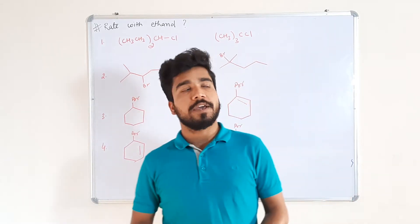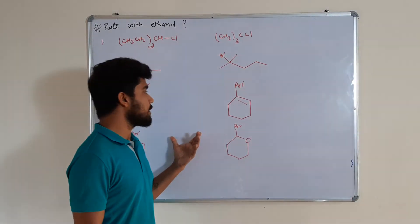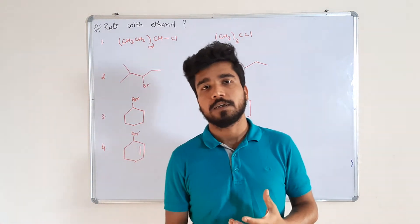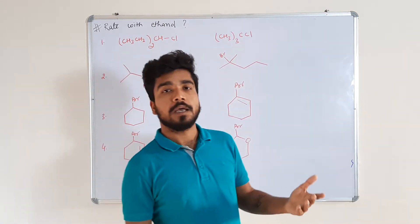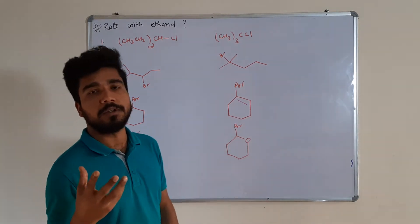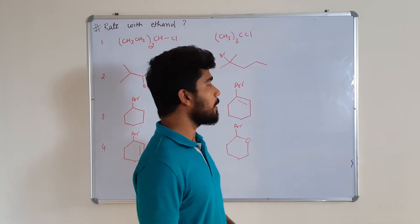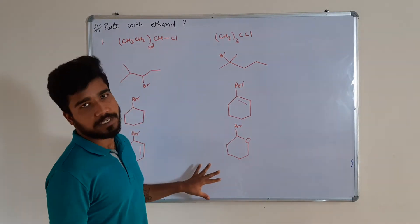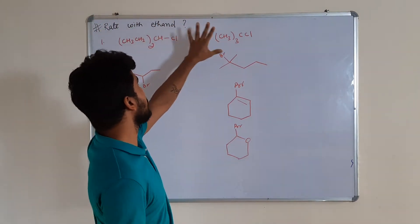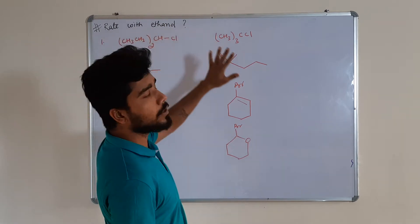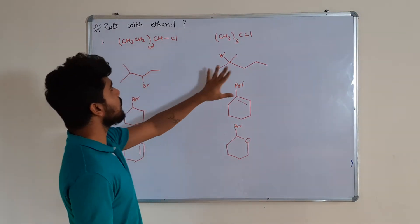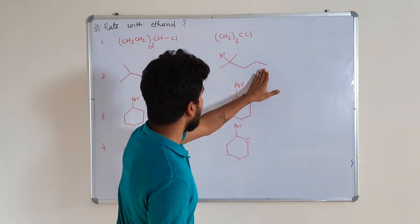Hello students. We are here with some questions to discuss, and these are questions based on substitution unimolecular reaction, which we were discussing from the last 2-3 lectures. This question is about determining rate of reaction with a particular nucleophile. We are comparing the rate of SN1 reaction, specifically rate with ethanol. The question asks: the rate of solvolysis with ethanol will be more rapid for which of the two compounds?